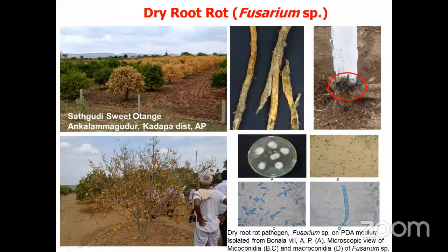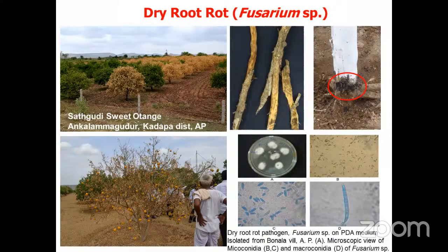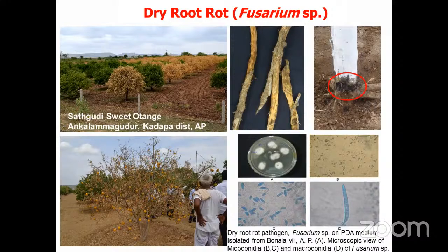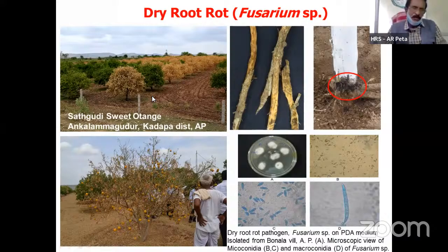This particular pathogen generally infects plants that are physiologically weak. Unlike Phytophthora diseases, dry root rot can be distinguished from Phytophthora foot rot and root rot — it infects the larger roots. In citrus, there are two kinds of root systems: structural roots (tap roots) and feeder roots. Phytophthora generally selectively infects feeder or fibrous roots, whereas Fusarium infection starts from the structural roots.